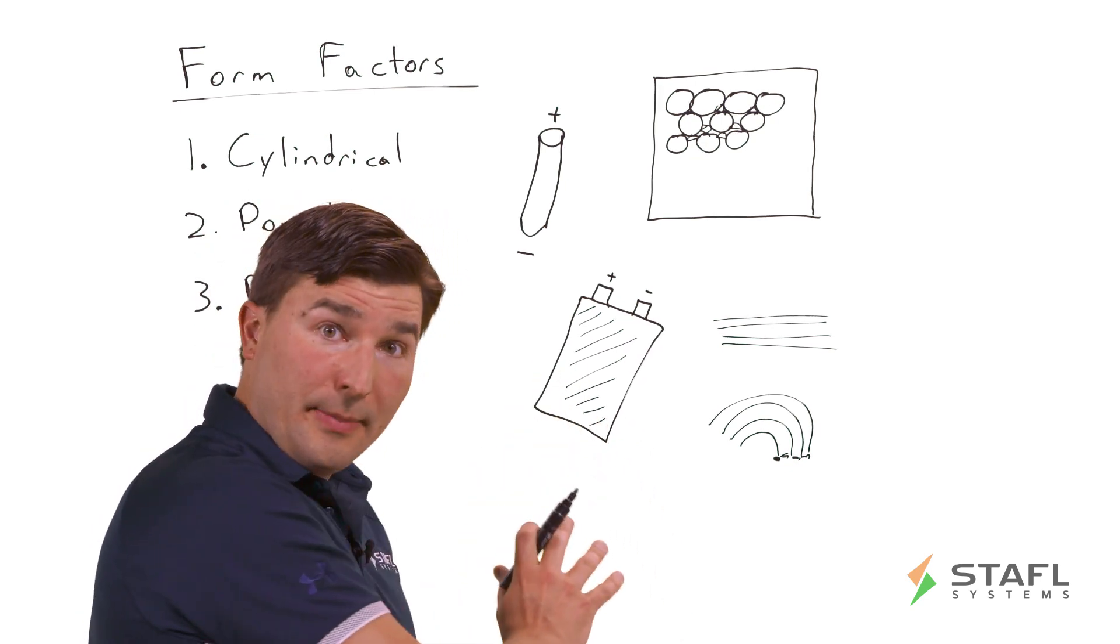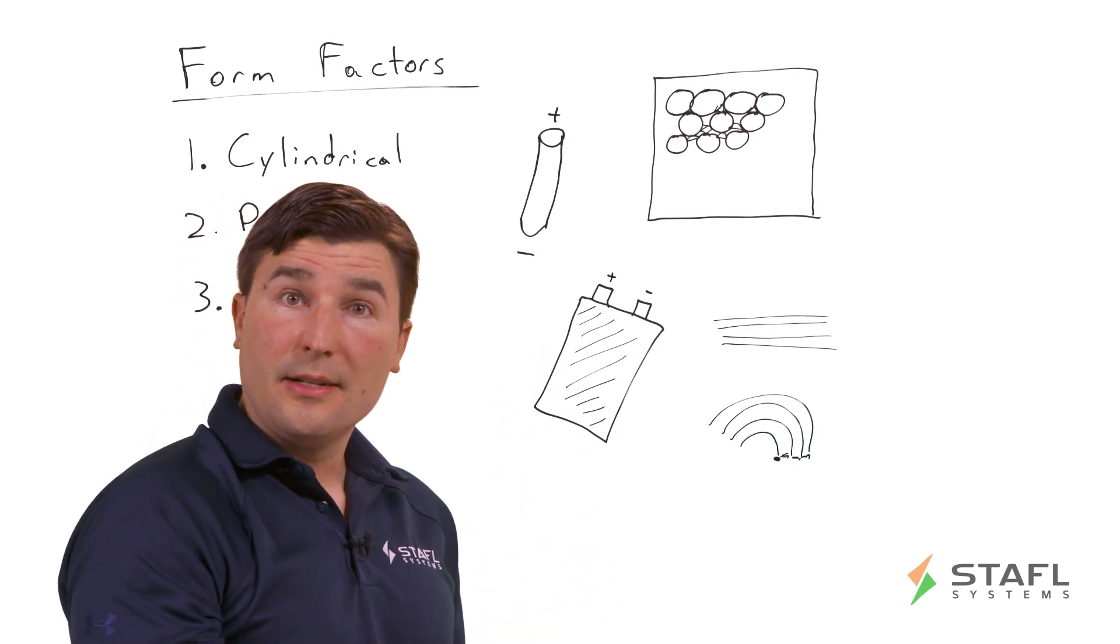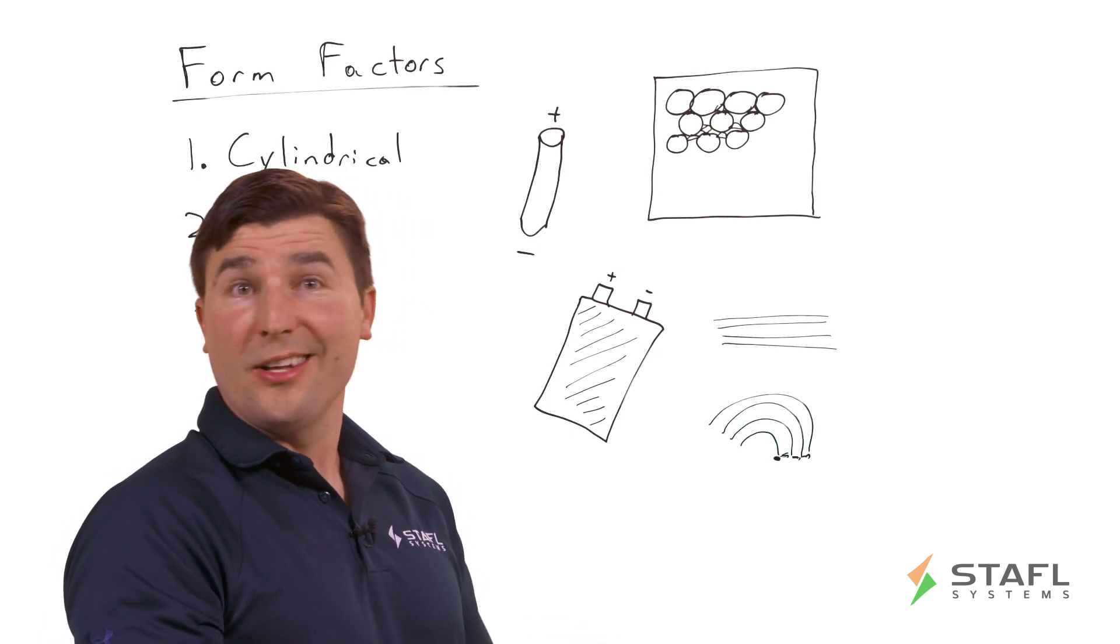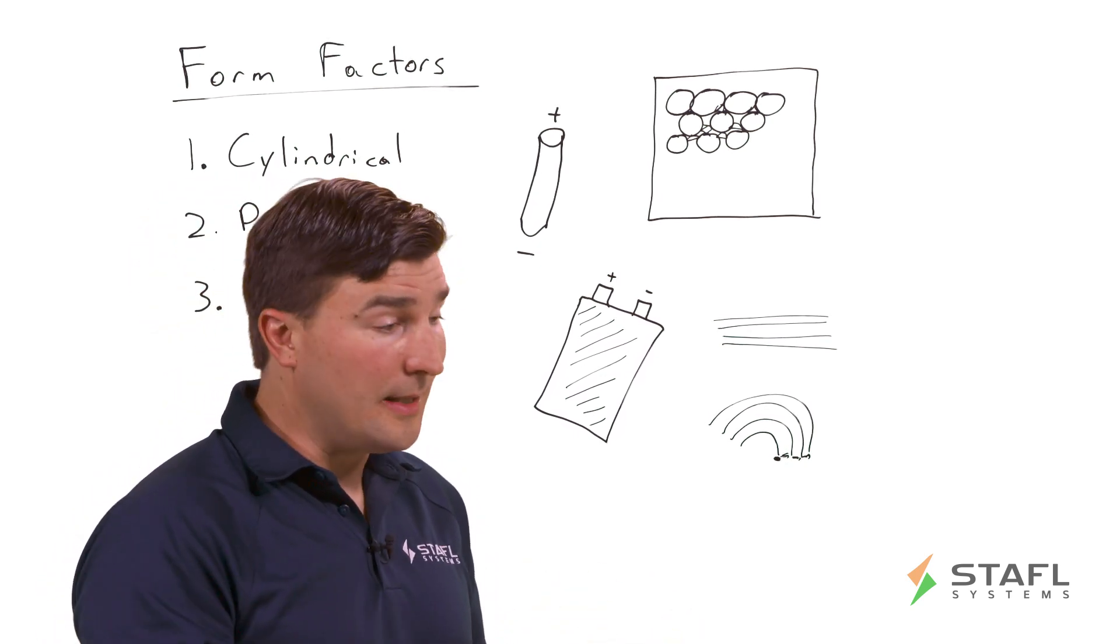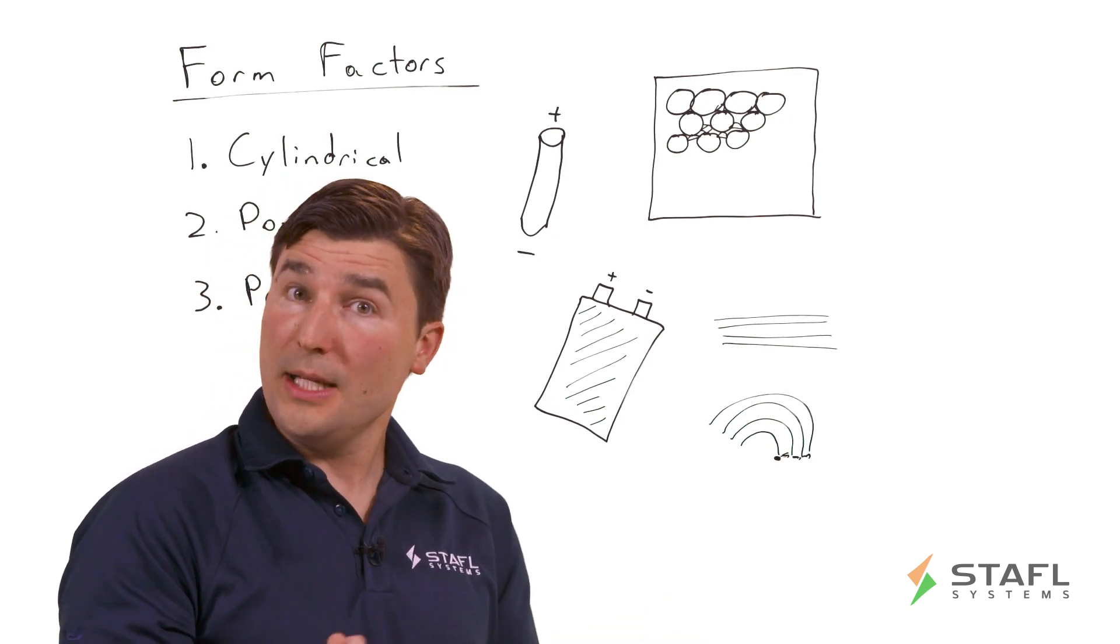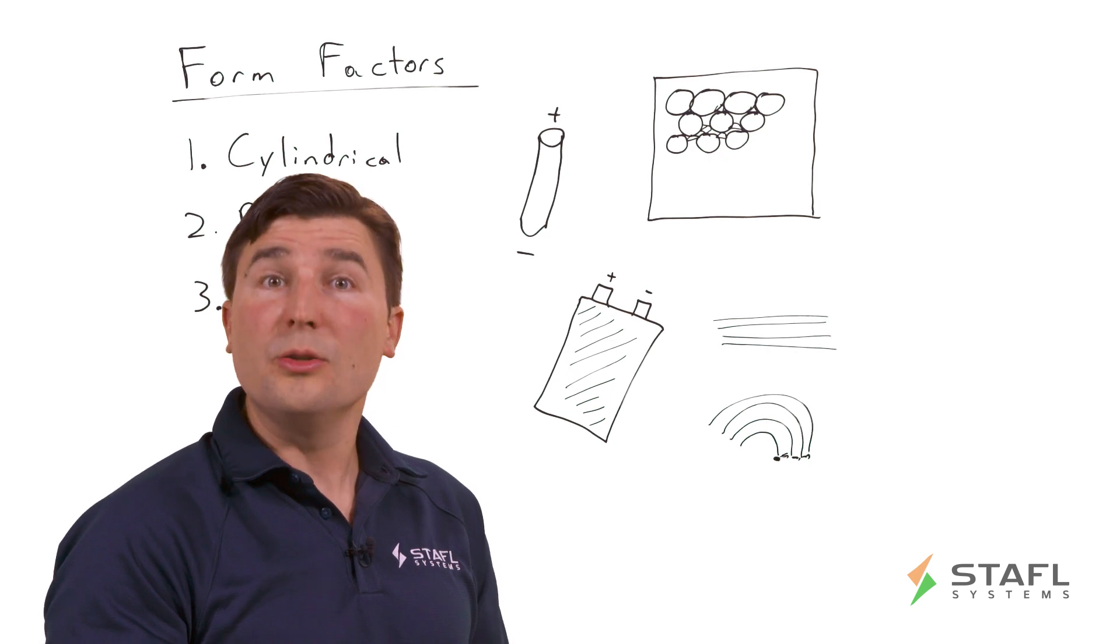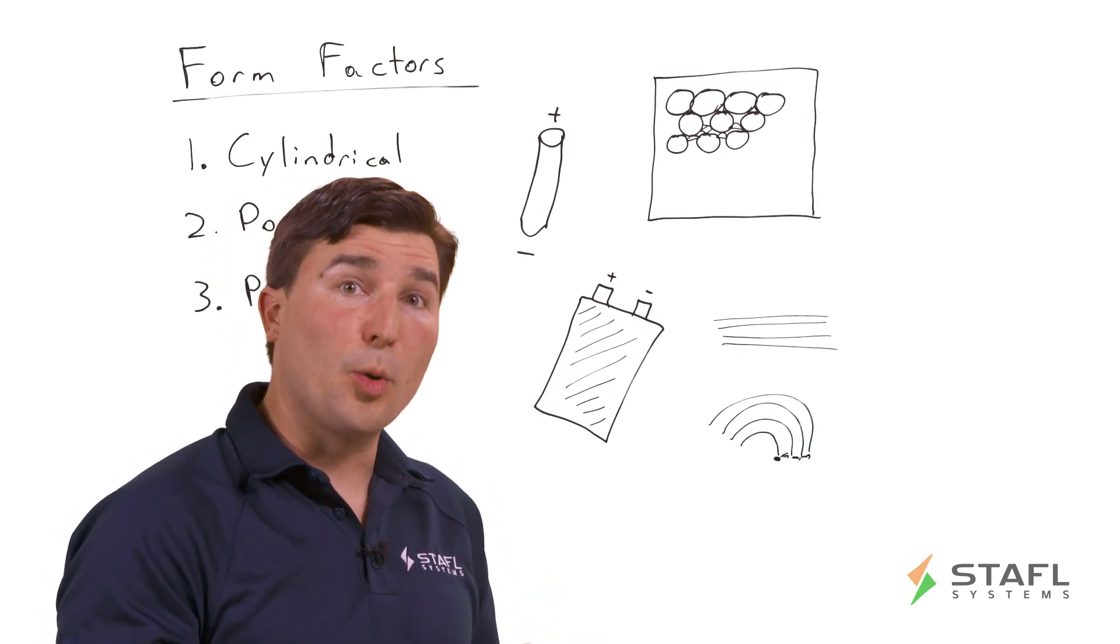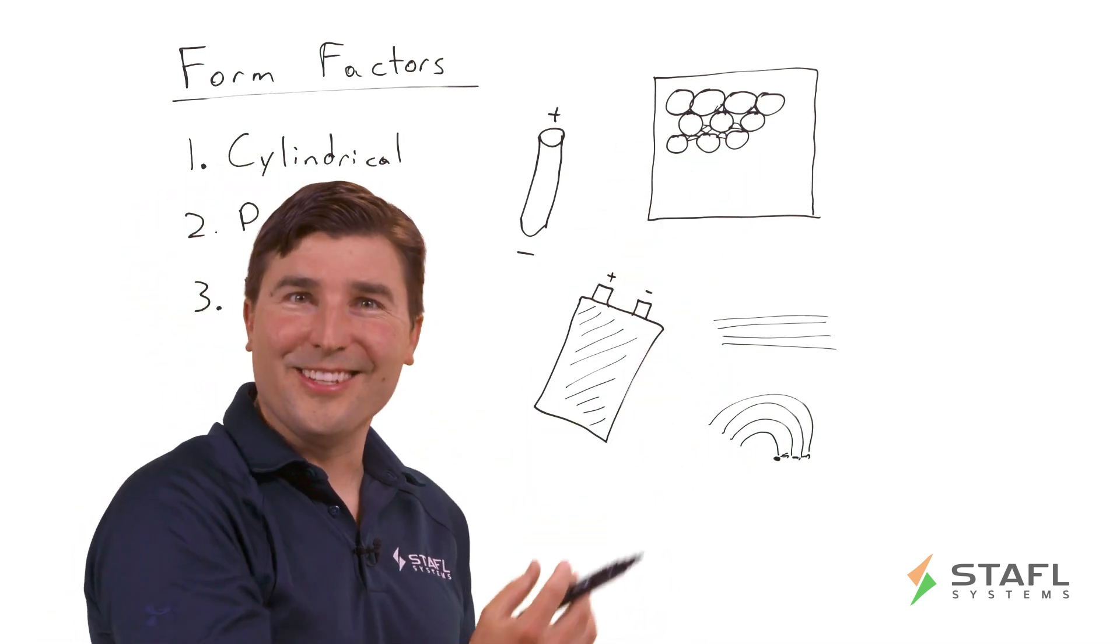Some drawbacks to the pouch cell form factor are that there are no standard sizes of the pouch cell. So generally speaking, if you design a battery pack around cell A from a certain vendor, even if it's the same capacity, say cell A has 20 amp hours and cell B has 20 amp hours, they will typically not be the exact same size. So you would need to redesign the entire battery pack mechanical structure to support a cell change. Whereas as I mentioned before, the cylindrical cell is more standardized.